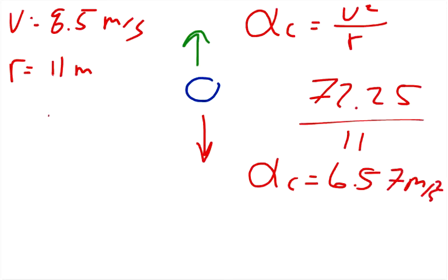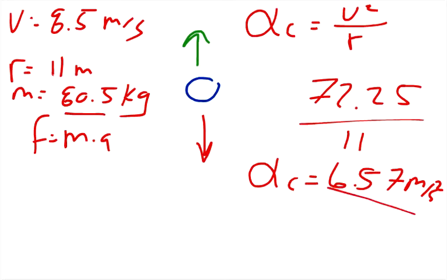And so force equals mass times acceleration. And so the mass of the archaeologist was 80.5 kilograms. And so we can multiply 80.5 times 6.57. And so we have a force right here, roughly equal to 528.72 newtons.